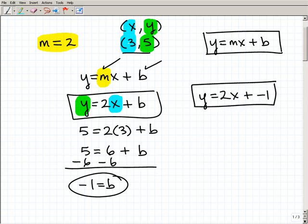And that's it. That's the equation of a line that has a slope of 2 and passes through the point 3, 5.